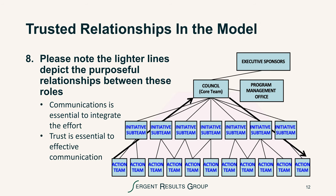Please note in this diagram that there are lighter lines and darker lines. It's important to recognize that communications are essential to integrate this effort. Trust is essential to make effective communications. The relationships depicted in the lighter diagram are enhanced when we look at the darker lines that indicate upward and downward regular communications between the core council and the individual design teams. It's really critical that those relationships are reinforced with trust.